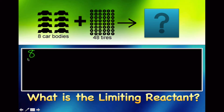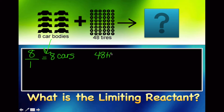I have 8 car bodies and I use 1 per car, so that means I can make 8 cars total with the bodies I have available. The other thing I have are 48 tires, and I know that I put 4 tires on each car. So 48 divided by 4 is 12 cars.